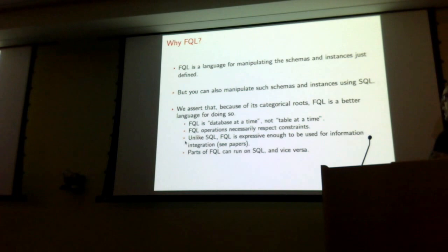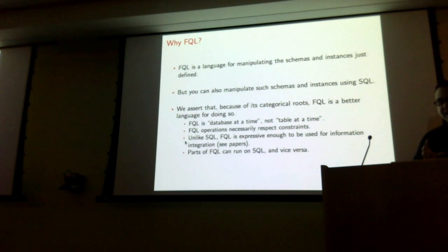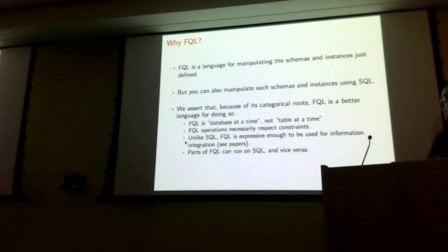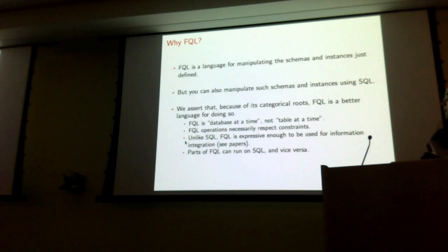Here are a few reasons why: in FQL you transform whole databases to whole databases, not just one table at a time. In this language you can only write queries that respect the constraints of your database tables. There are some other theoretical properties that FQL has that SQL does not, and there's a formal connection between FQL and SQL as well. I won't argue too much about why FQL is better than SQL — I'm just going to define what FQL is and then show you how to program it using Haskell.